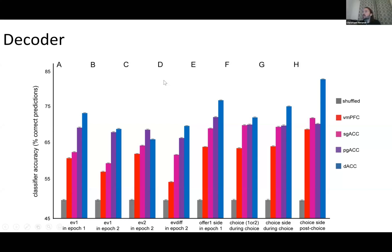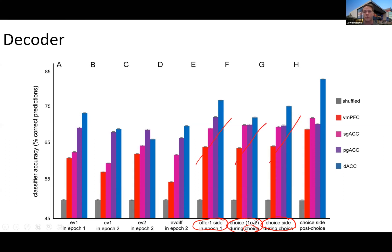Lawrence Hunt asks: with the decoder, are you decoding left versus right action choice, or choose option one versus choose option two? And if the former, might the hierarchy increase towards action in DACC but move away from a one-versus-two comparison? We have both pieces of information. We have the offer side during epoch one that's left versus right, choice as in option one or option two during the choice epoch, and also choice side during the choice epoch. So in all, three cases where the trend stays the same regardless of whether it's position or offer number.